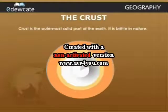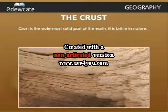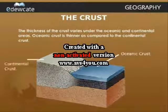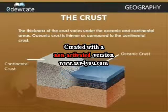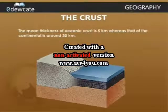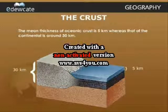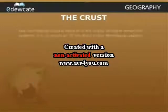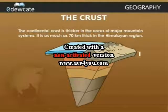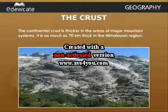The crust is the outermost solid part of the Earth. It is brittle in nature. The thickness of the crust varies under oceanic and continental areas — oceanic crust is thinner compared to the continental crust. The mean thickness of the oceanic crust is 5 km, whereas that of the continental is around 30 km. The continental crust is thicker in the areas of major mountain systems, as much as 70 km thick in the Himalayan region.